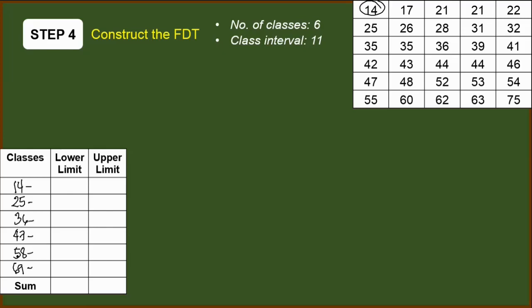These numbers that we wrote on the left side of the classes are what we will refer to as the lower limit. So let's accomplish this column as well. The lower limit are these numbers: 14, 25, 36, 47, 58, and 69.